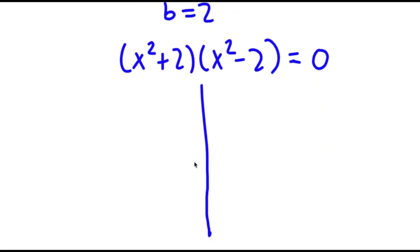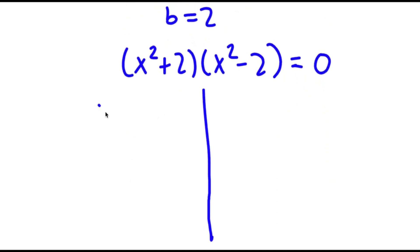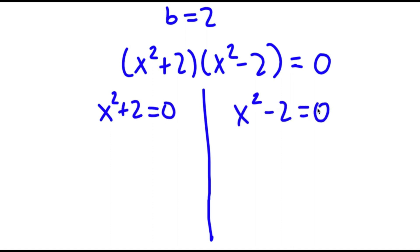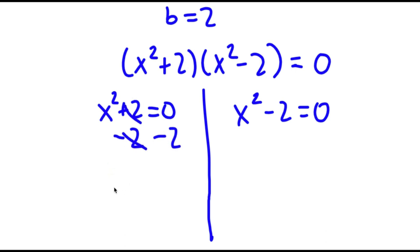This gives me two equations. I have x squared plus 2 is equal to 0, and x squared minus 2 is equal to 0. For x squared plus 2 equals 0, I can subtract 2 on both sides — these two cancel out — and I have x squared is equal to negative 2.